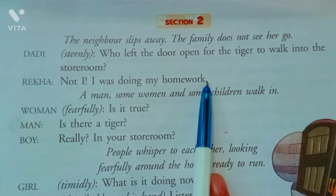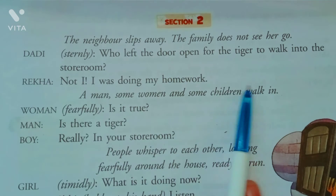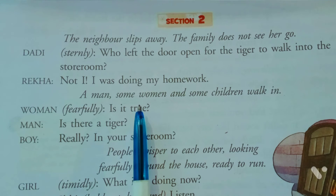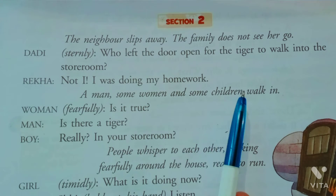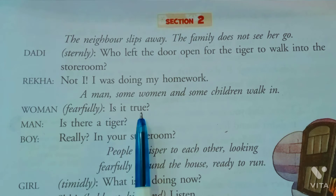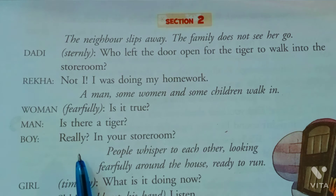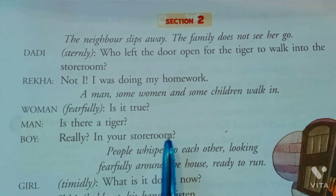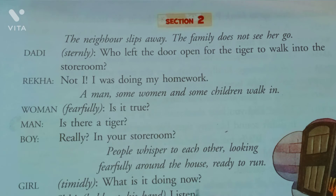A man, some women and some children walk in — aas paas ke log khatthe hone shuru ho gaye jab pata laga ki ghar mein tiger hai. Women fearfully boli 'Is it true?' Man bola 'Is there a tiger? Really? In your storeroom?' People whisper to each other, looking fearfully around the house, ready to run.